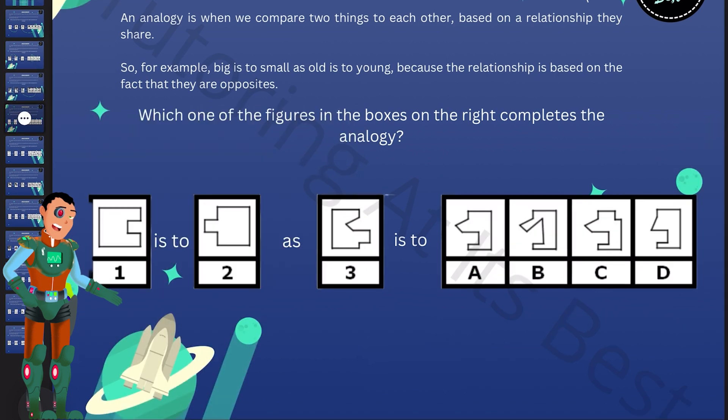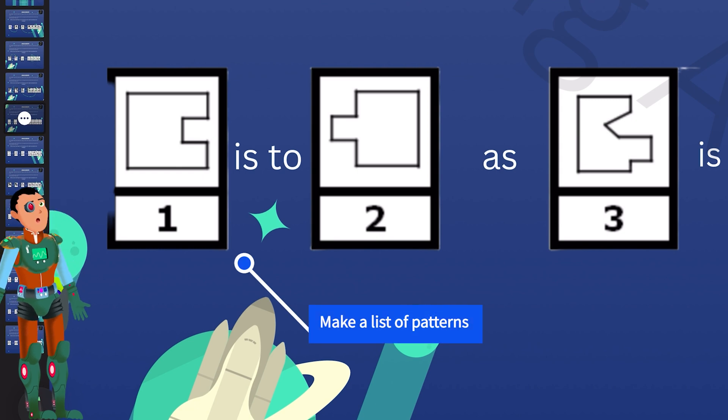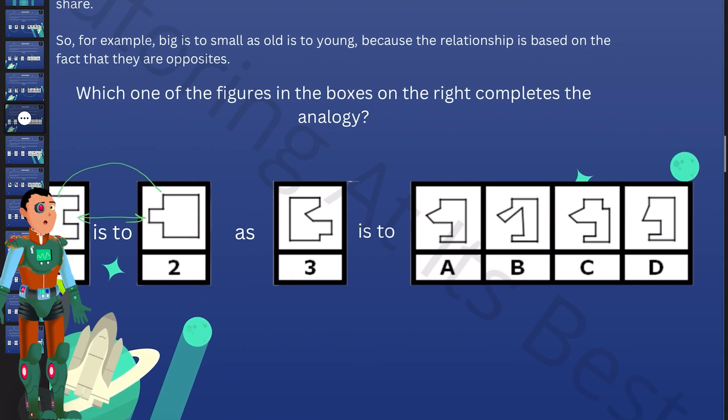Okay, let's go for question four. So which one of the figures in the box on the right completes the analogy? So let's compare one and two first. So if you look, the two shapes need to be like a jigsaw. So they need to come together. And they have to fit together.